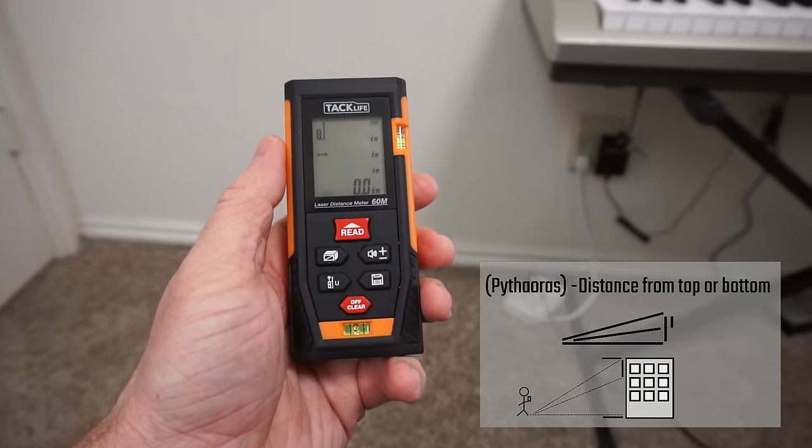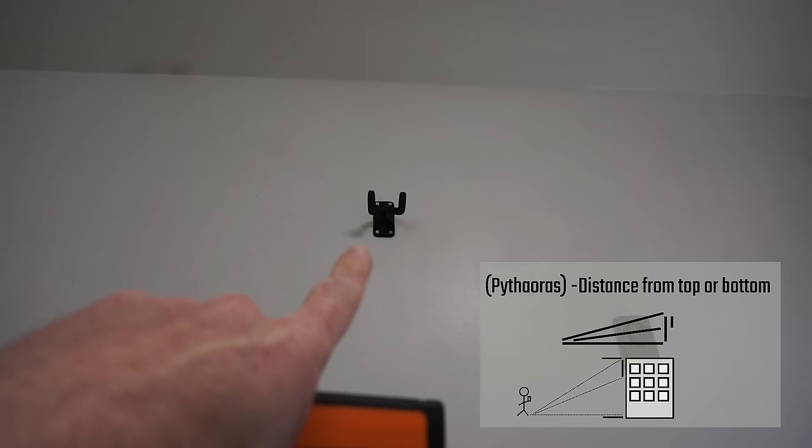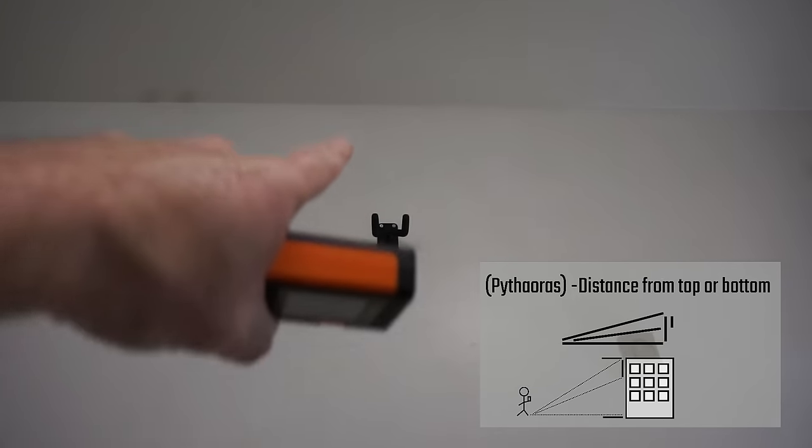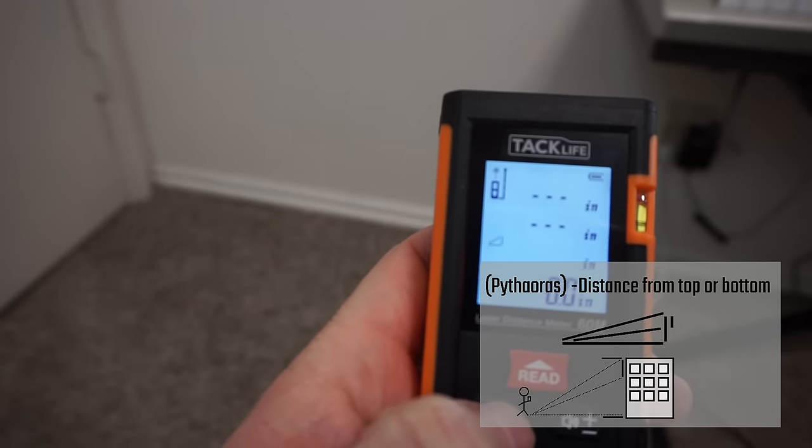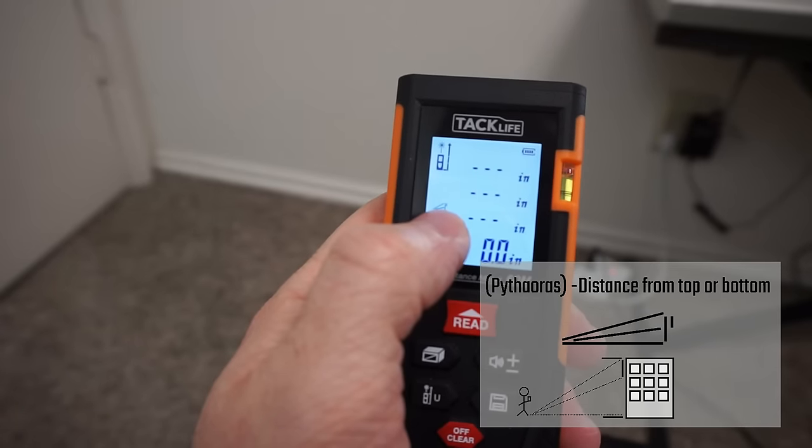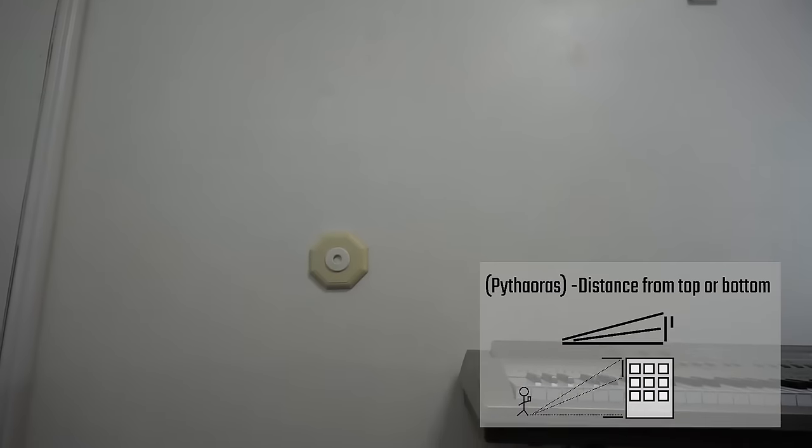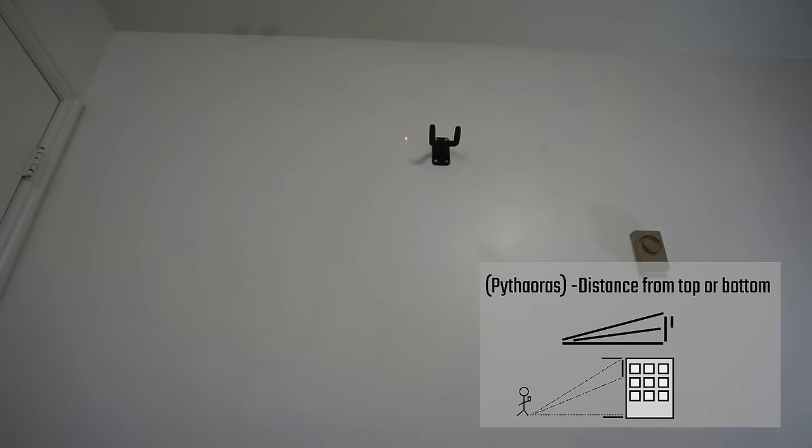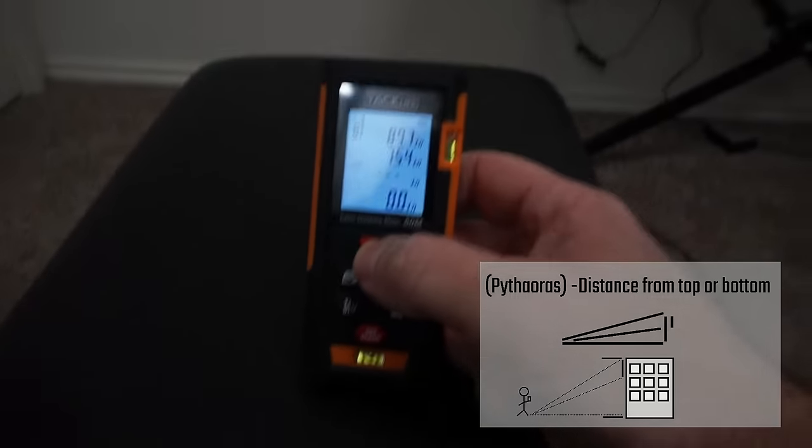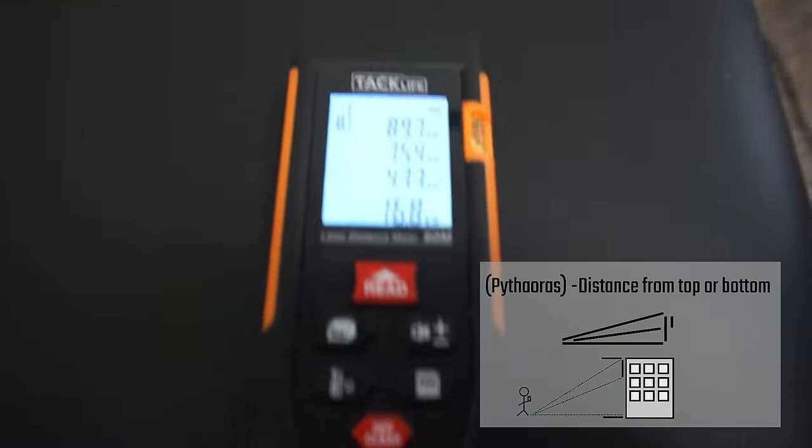The next function I want to show you is how you can determine the distance from one thing to another. So say my guitar stand. Let's pretend that that's a window on a building. And I want to know how far it is from the top of the building down. So what we do is we press this button until we get to the third Pythagoras function. You can see it's got a line going through the triangle and then a line to the side. So what we want to do first is we will point this up to what the top of our building would be. So let me point that to the top. That's pretty close. Then we want to go down and point to the top of the window on my guitar stand. So we got that measurement. And then this would be on the ground and we just measure the bottom of the building here.